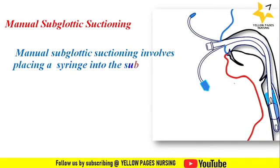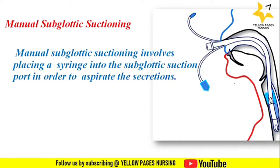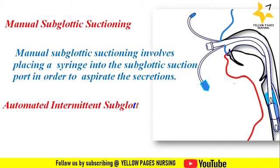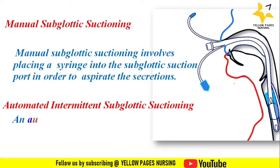Manual subglottic suctioning involves placing a syringe into the subglottic suction port to aspirate the secretions. As discussed, a 5 ml syringe is used at the subglottic port and the secretions are aspirated.